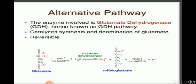The second pathway of ammonia assimilation is the alternative pathway. The glutamate dehydrogenase enzyme is involved in this pathway; hence it is also known as the GDH pathway. This enzyme catalyzes the synthesis and deamination of glutamate, and this is a reversible reaction.